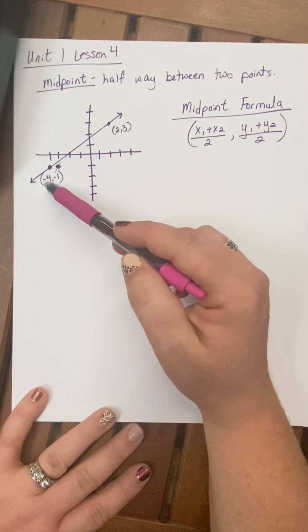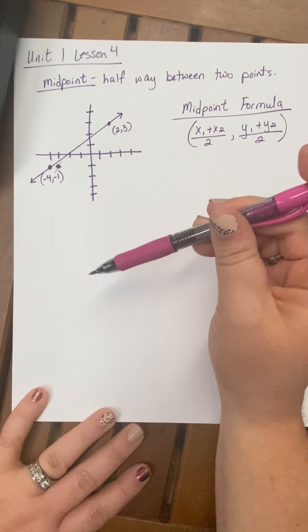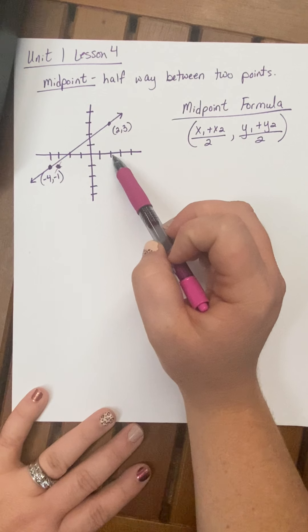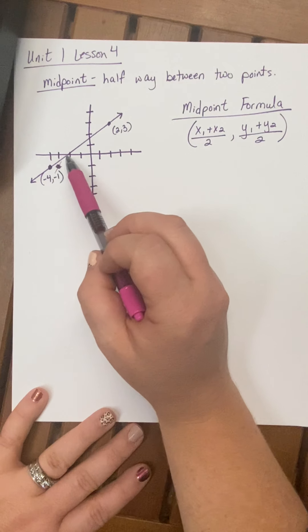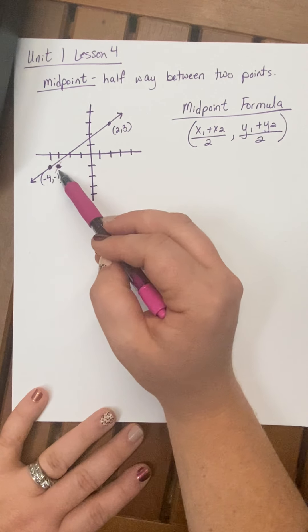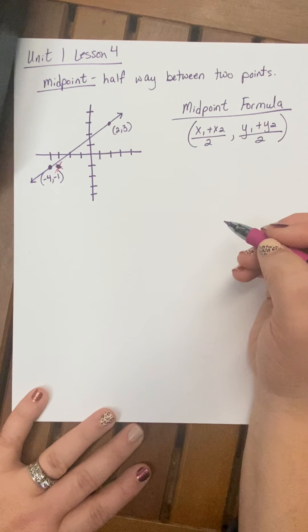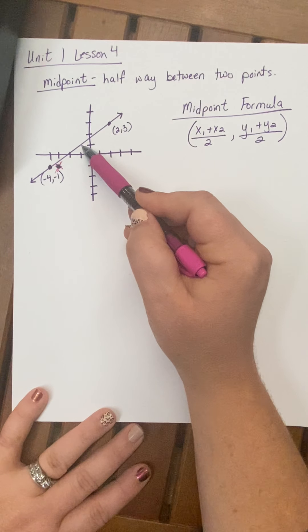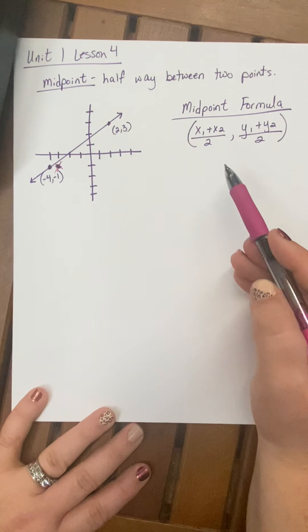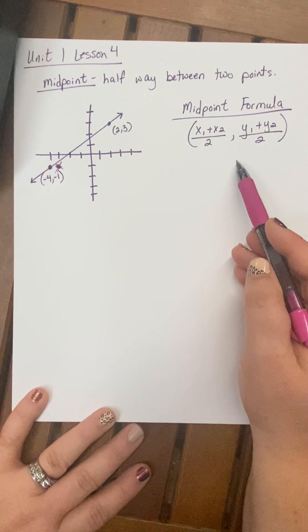But the midpoint is halfway between two points. It's basically the middle point. So if I have the coordinate plane here, and I have point 2, 3, and now you go over 2, up 3, and you have point negative 4, negative 1. Go over negative 4, down 1. I made an oops, so y'all just ignore that spot there. I want to find out what point is exactly in the middle. Well, using this formula here, the midpoint formula, we can find exactly which spot, which point is in the middle.